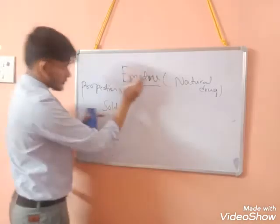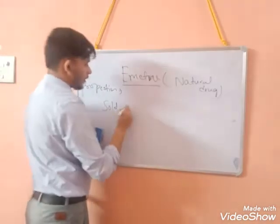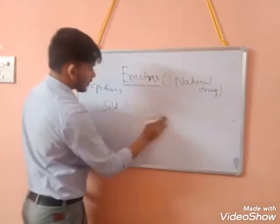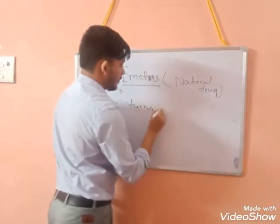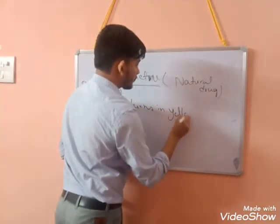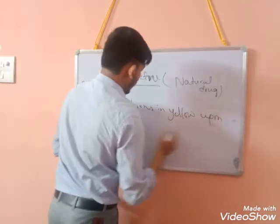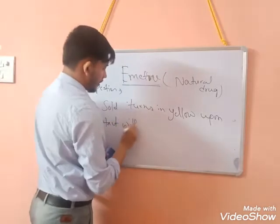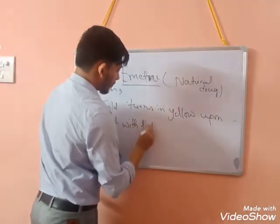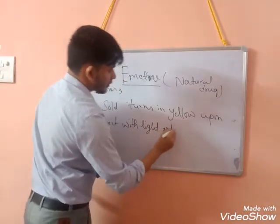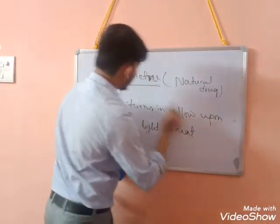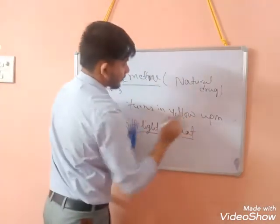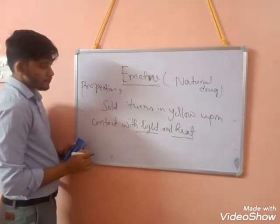It is moderately soluble in dilute ammonium hydroxide. Also, pure emetin darkens or turns yellow in color upon contact with light and heat.